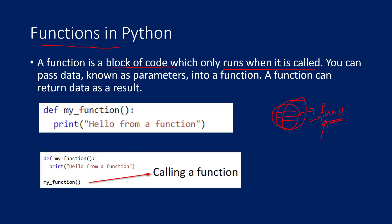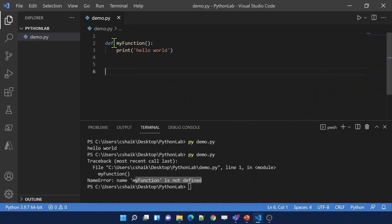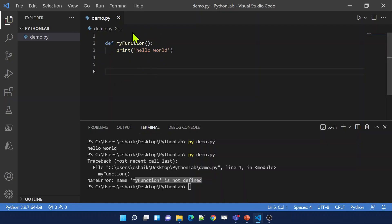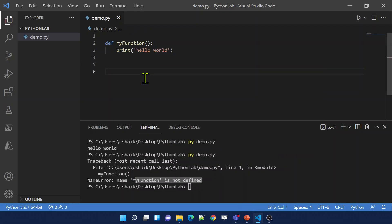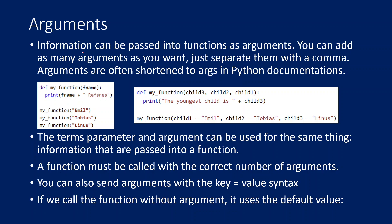To functions we can pass data — we call them parameters or arguments. We can also return data back from the function. Parameters and arguments are actually the same thing. When you see the variable from the function definition point of view, that is called a parameter. When you see it from the execution point of view where you are calling that function, at that time we call it an argument. Let me show you this with a practical example.